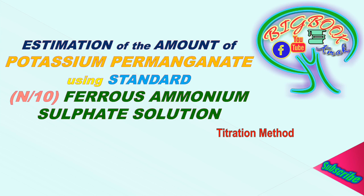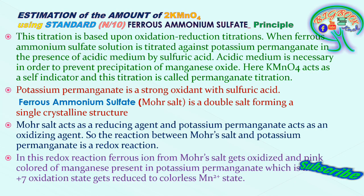Coming to the next slide, we are going to discuss the principle. The principle is a titration method based upon oxidation and reduction of the two reactants, where ferrous sulphate solution is titrated against potassium permanganate in the presence of acidic medium of sulfuric acid. Acidic medium is necessary in order to prevent precipitation of manganese oxide, and potassium permanganate acts as a self-indicator. This titration is called permanganate titration.